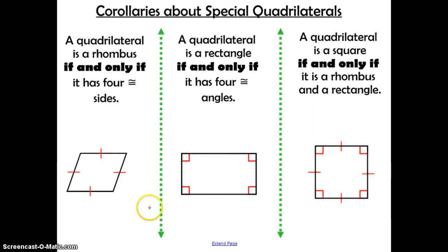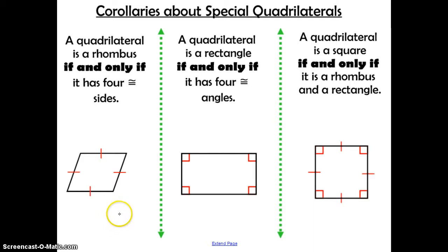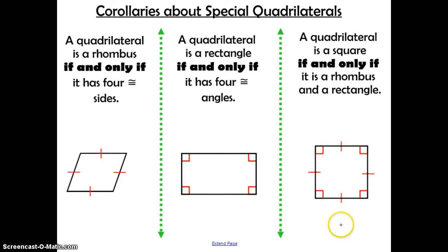These are some corollaries about special quadrilaterals. We're going to use these mainly to prove that a quadrilateral is a rhombus, a rectangle, or a square. All three are given in biconditional form, meaning the conditional statement and the converse are both true. A quadrilateral is a rhombus if and only if it has four congruent sides. A quadrilateral is a rectangle if and only if it has four congruent angles. And a quadrilateral is a square if and only if it is a rhombus and a rectangle — meaning it needs both four congruent sides and four congruent angles.